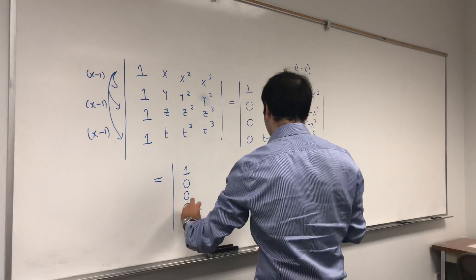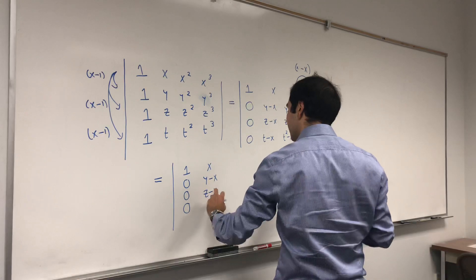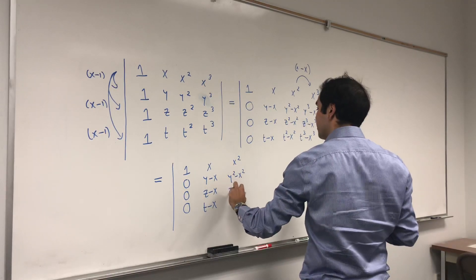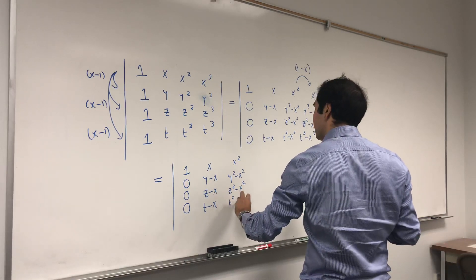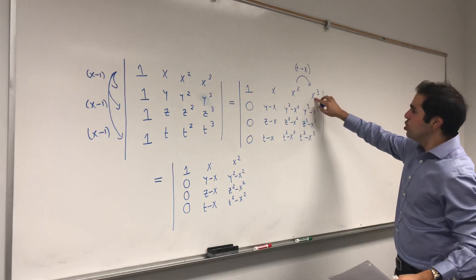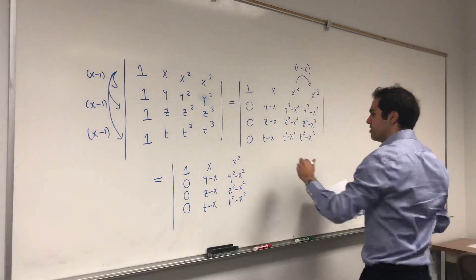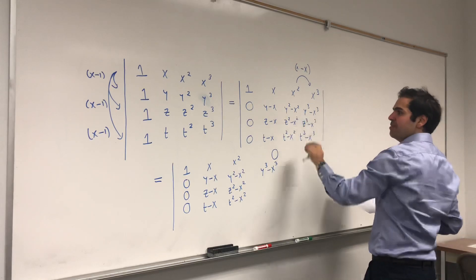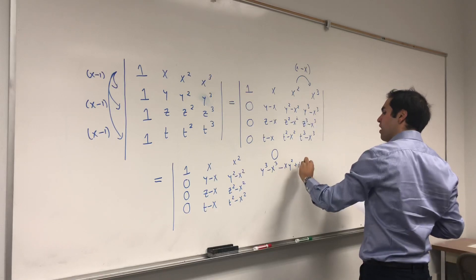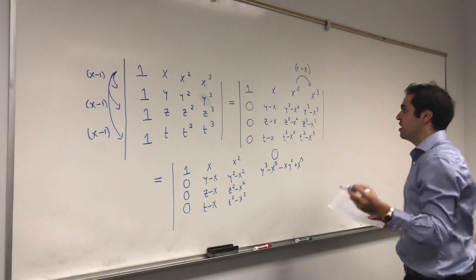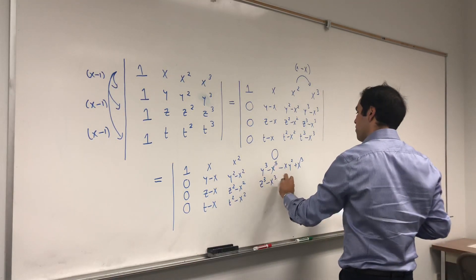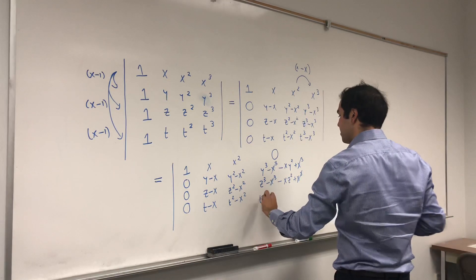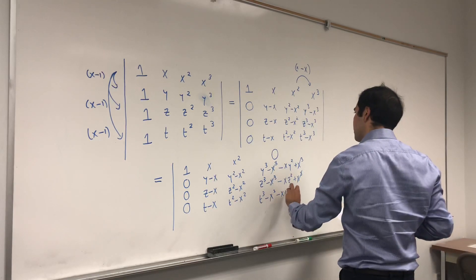After subtracting −x times the third column from the fourth column, we get: row 1 is 1, 0, 0, 0; row 2 is x, y−x, z−x, t−x; row 3 is x², y²−x², z²−x², t²−x²; and in the last row: x³ minus x·x² becomes 0, then y³−x³ minus x·y² gives y³−xy²−x³+x³, which simplifies. Similarly z³−x³−xz²+x³ cancels, and t³−x³−xt²+x³ cancels.